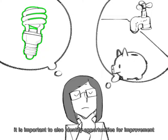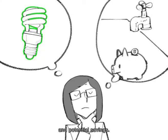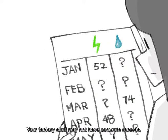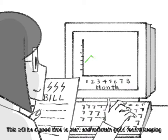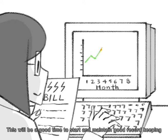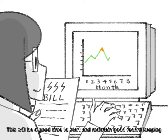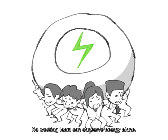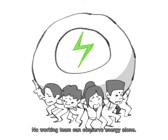Your factory staff may not have accurate records. This will be a good time to start and maintain good record-keeping for your large energy consumption areas of your factory. No working team can conserve energy alone.